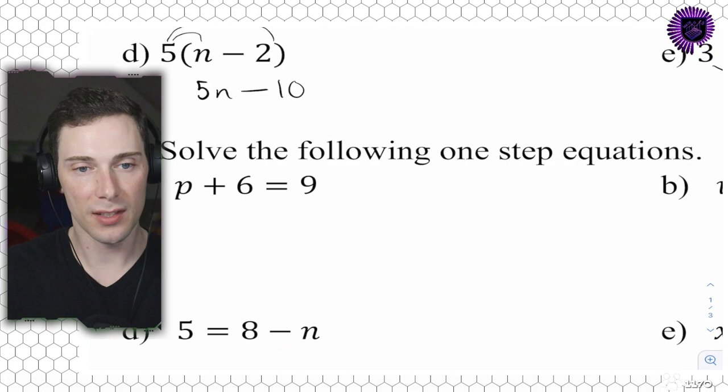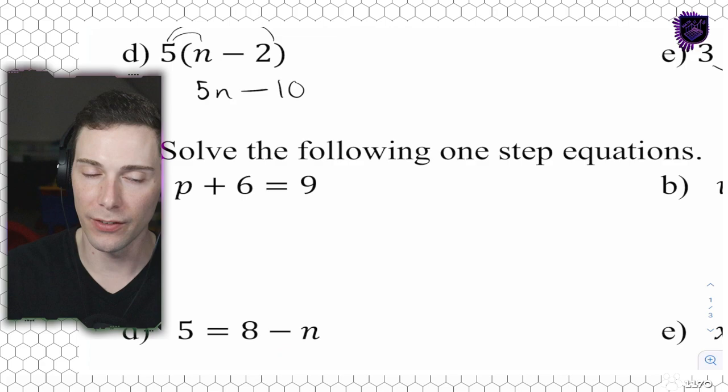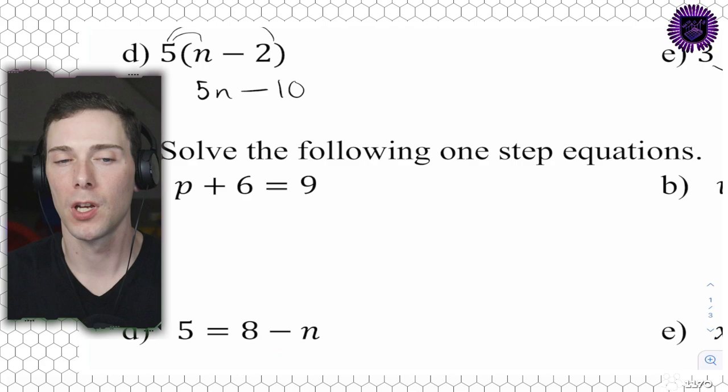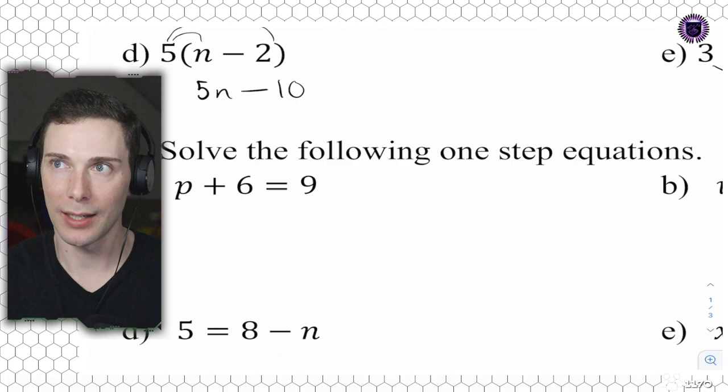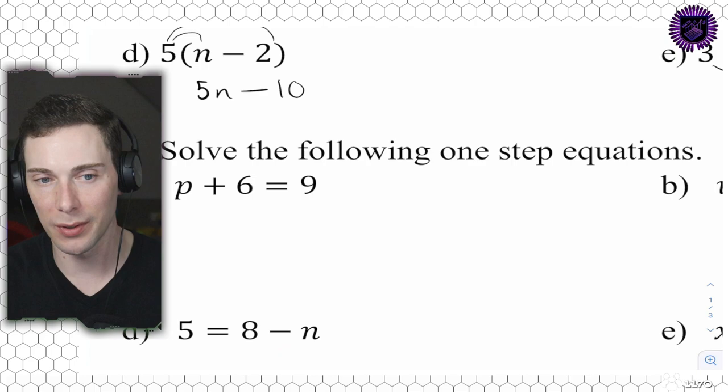These one-step equations are still important to pay attention to, even though we've done lots of them already. I don't want you to just use substitution. I want you to practice the skills of solving equations using isolation. You want to isolate the variable and apply the same thing to both sides, keep the equation balanced, and slowly work through the problem to apply that skill when things get harder.